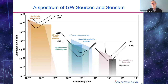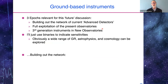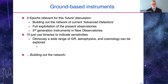Moving on to the last domain, from a couple hertz up to a couple kilohertz, ground-based interferometric detectors are the best choice. There are three relevant epochs: building out the network of current advanced detectors; full exploitation of the present 3 and 4 km observatories; and then next-generation instruments in new observatories. I'll mention binary neutron star reach a couple of times as a sensitivity indicator. I mostly want to see things that are guaranteed sources appearing at high signal-to-noise in multiple detectors — with no obvious explanation. Let me talk about building out the network.